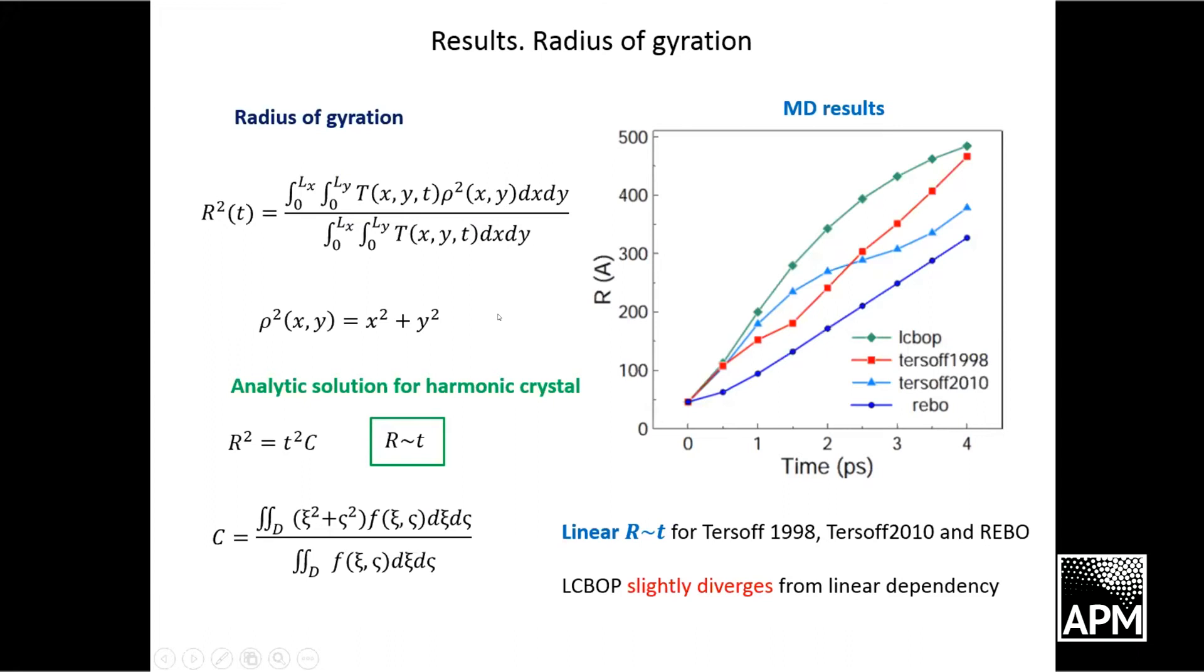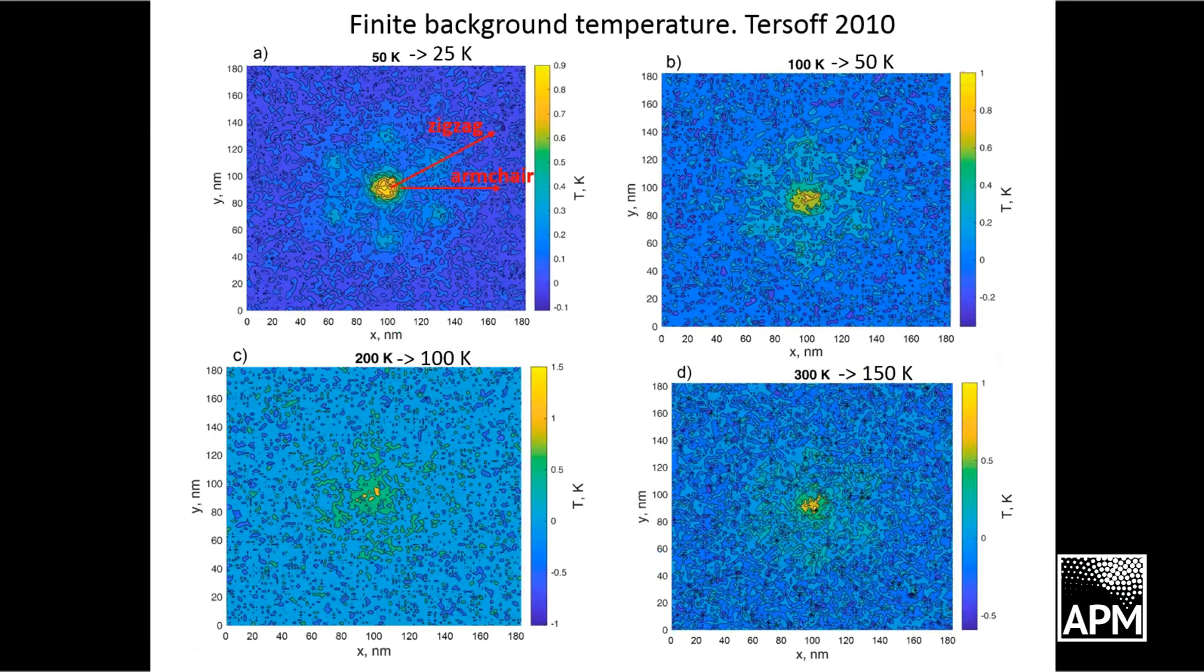To compare our results with analytics, we calculate radius of duration, which is a measure of the distance that heat travels. We see that for all the potentials, the dependence of this radius against time is quite linear, except LCBOP potential which slightly diverges from linear. This agrees with the analytic solution for harmonic crystal. It's quite an expected result as we consider zero background temperature.